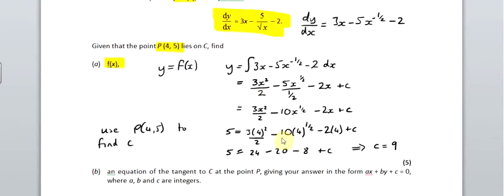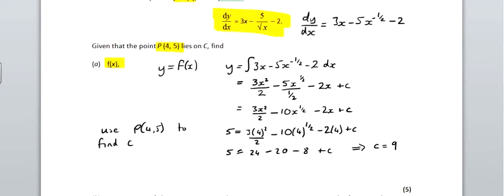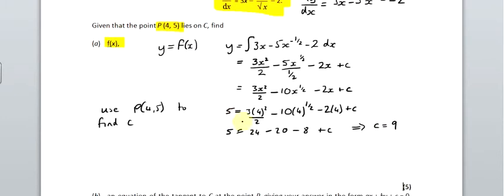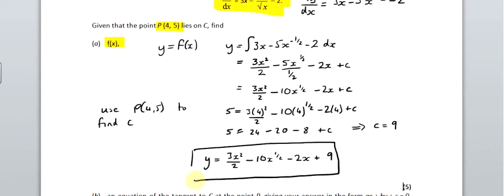We can finish off by writing our equation of our curve. So y equals 3x squared over 2 minus 10x to the half minus 2x plus 9. There we go.